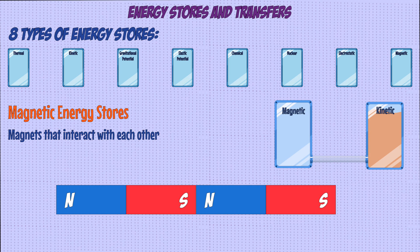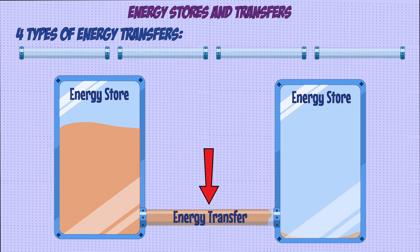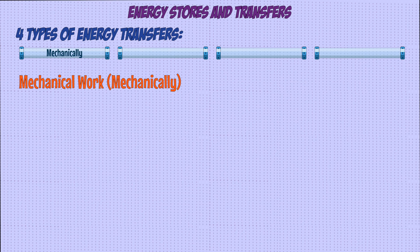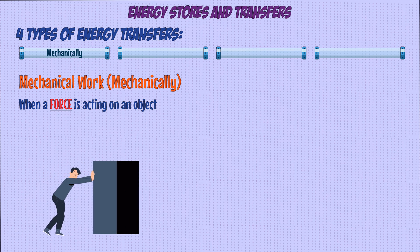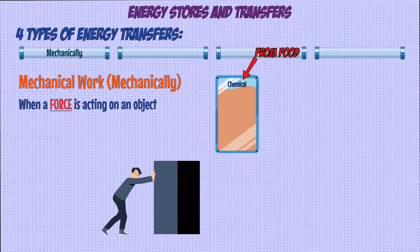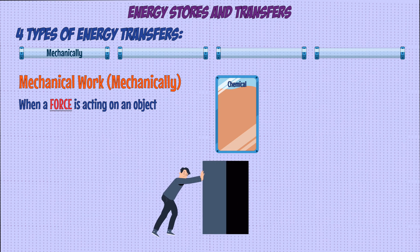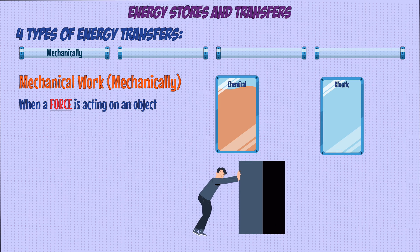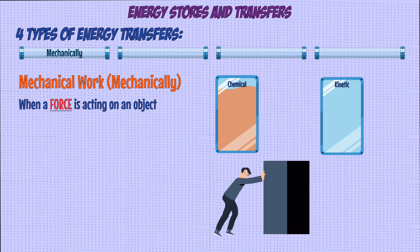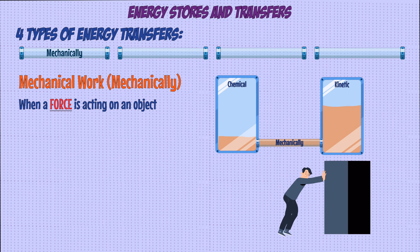Now let's look at the four types of energy transfer pathways. These cause energy to move from one store to another. The first is mechanical work, used whenever a force acts on an object. For example, if a person pushes a box, the energy in their chemical energy store from the food they've eaten is used to apply a force to the box. Pushing it causes the box to move, and energy in the chemical store is transferred mechanically to the box's kinetic energy store.